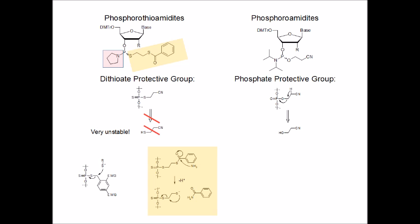Unfortunately, a more complicated protective group had to be employed since cyanomercaptoethanol, as shown in the middle of the left part of this slide, is an extremely unstable compound that cannot be used during the synthesis. The cleavage of the protective group in the thioamidite synthesis is shown in the bottom left of that slide. We also tried to employ benzoyl functionalities bearing electron-withdrawing groups; however, their cleavage is not as clean and requires the inconveniently smelling thiophenol for deprotection.